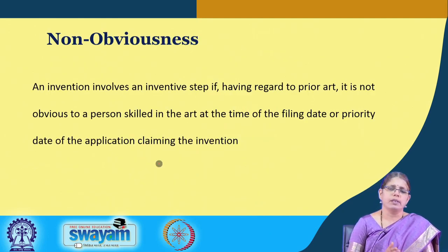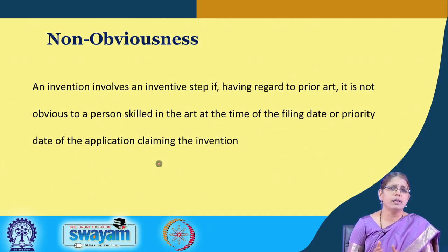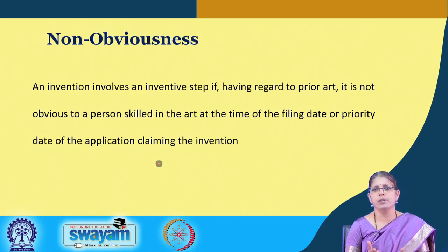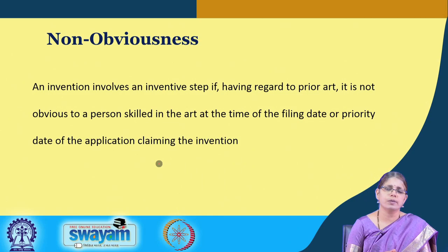The second important criterion after the assessment of novelty is what we call non-obviousness. An invention may be new but may be obvious, so the second criterion is equally important in relation to inventions. When we are assessing patentability criteria, the second criterion that comes into picture is the aspect of non-obviousness.